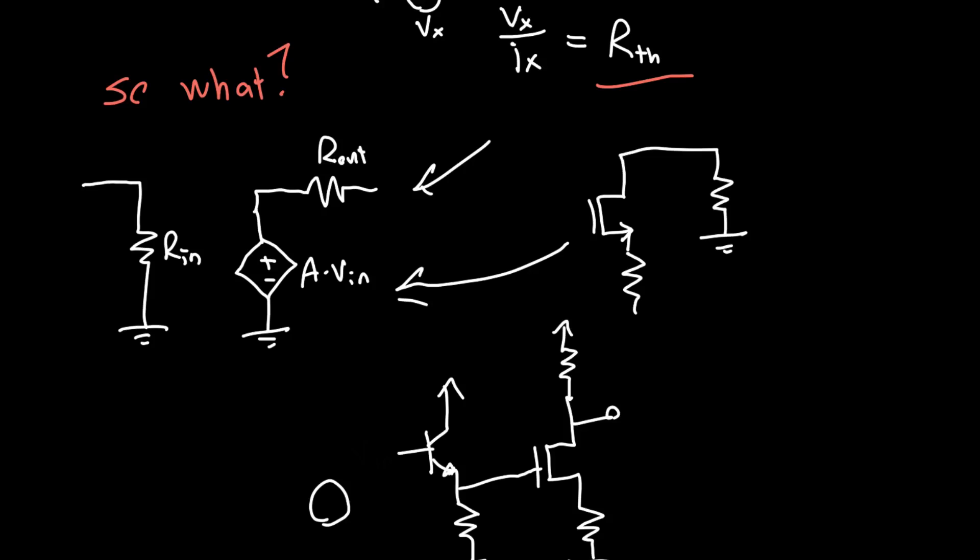Let me actually draw this in a different color. If we apply some test voltage Vx and we measure the current flowing out of it Ix, then that value Vx over Ix gives us the input resistance Rin. And so this Thevenin resistance is a super easy way to simplify these complicated circuits.